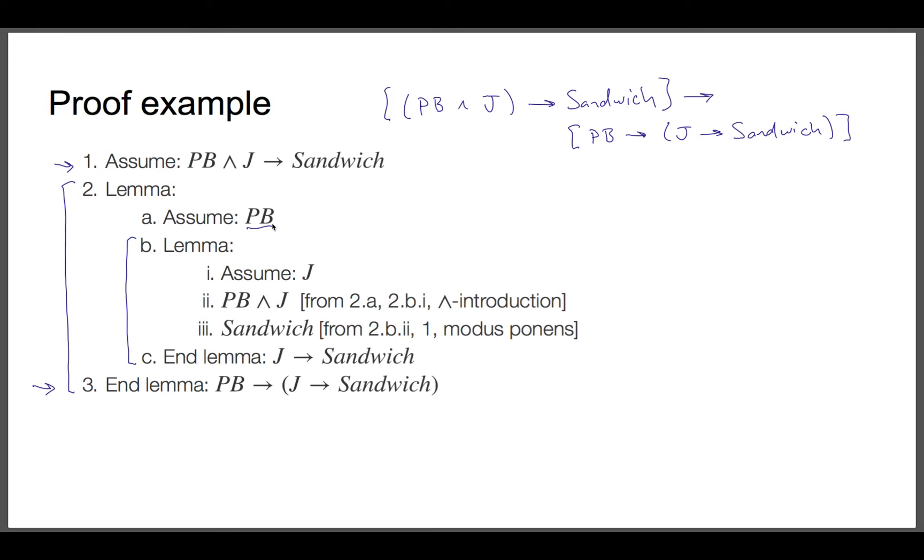Here, this assumption peanut butter goes here. We already assume jelly, that goes there. And now we're using an inference rule called and introduction.